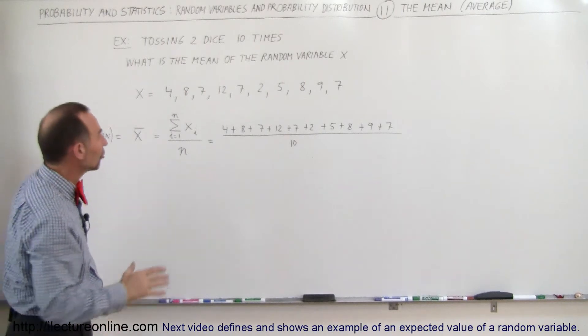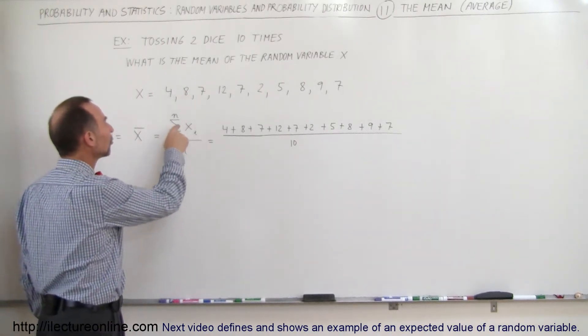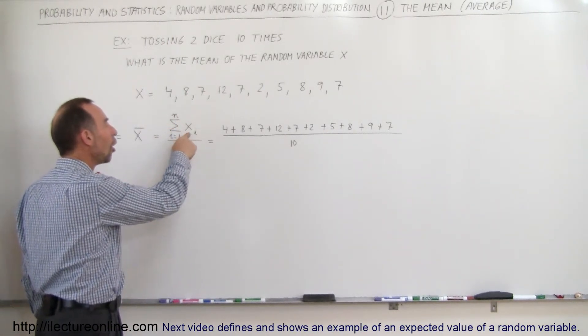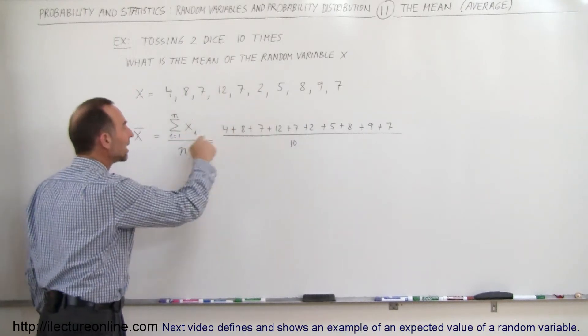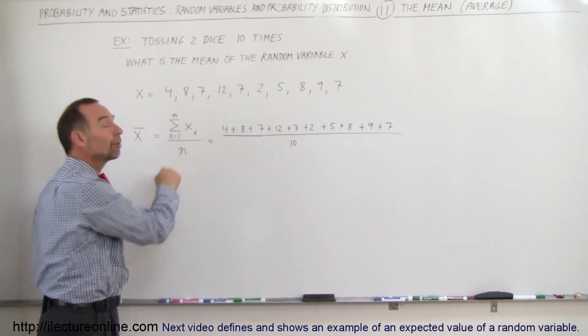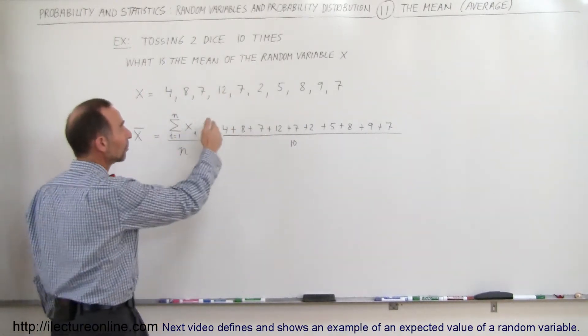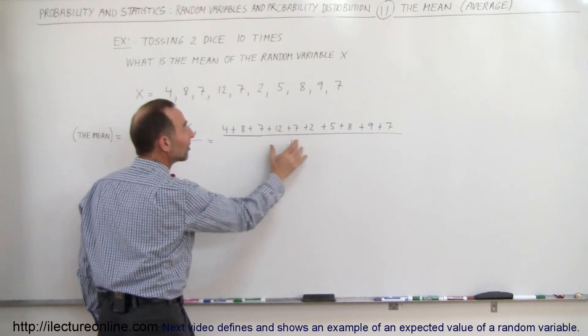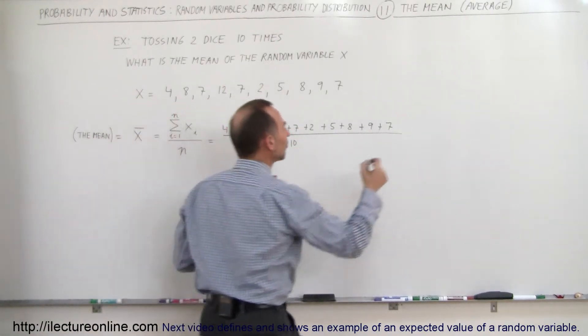And the mathematical definition of how to calculate that is you're going to sum up, this means summing, all the X's, all ten of the X's, divided by the total number of them that you have. So you add up all the values divided by the total number, which is ten, and when you do that, you get the following number.